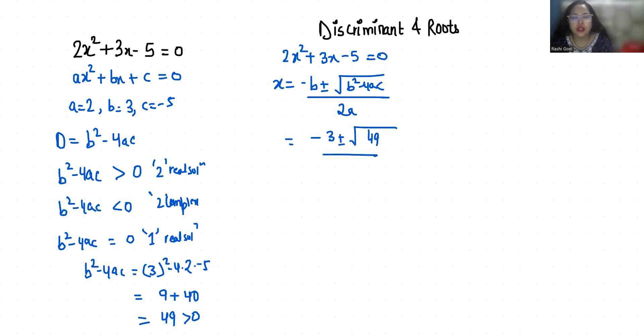So x₁ is (-3 + 7) / 4 and x₂ is (-3 - 7) / 4. x₁ is 4/4, that is 1, and x₂ is -10/4, that is -5/2. These are the two real solutions.